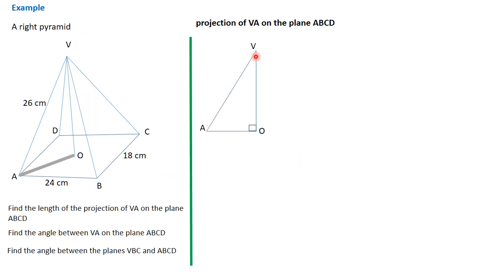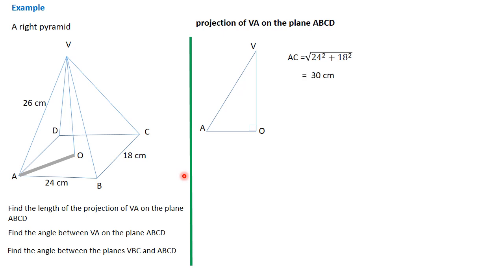We need to extract the right angle triangle. We're given some of the dimensions, but there are those that are not given. Since we want to get the distance A,O, which is the projection of V,A, we're first going to look for the distance A,C, then divide by 2 to get A,O. Remember, A,O is A to the center, so A,O is half of A,C. First we look for the length A,C: square root of 24 squared plus 18 squared gives us 30. Therefore, A,O is half of that, which is 15. The projection of V,A on that plane is 15 centimeters.